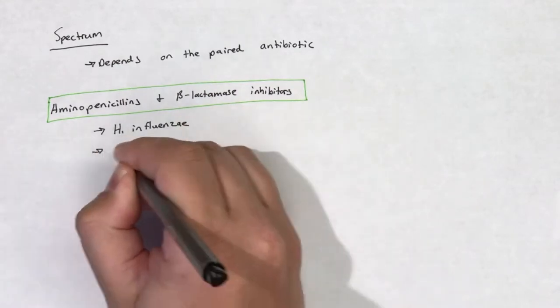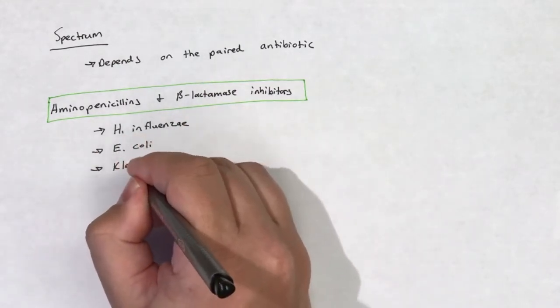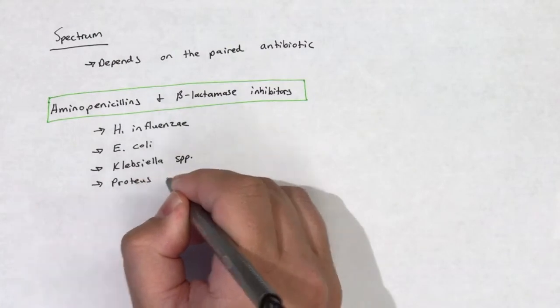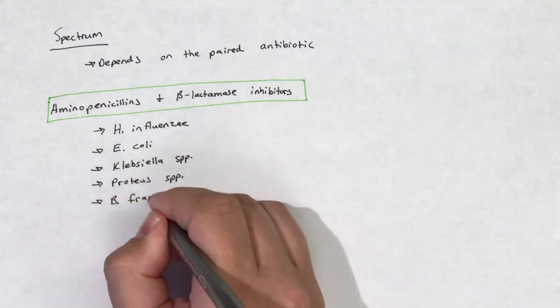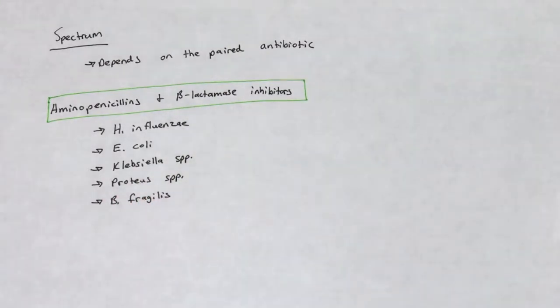An example of this is that beta-lactamase inhibitors extend the spectrum of aminopenicillins to include H. influenzae, E. coli, Klebsiella species, Proteus species, and B. fragilis.